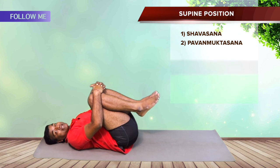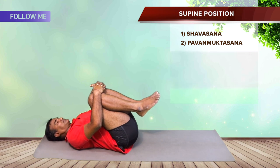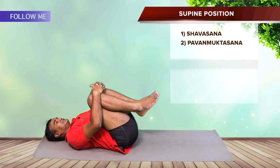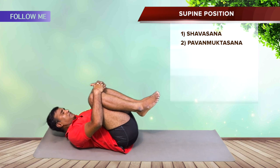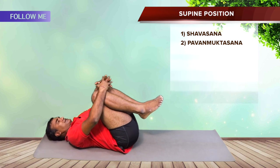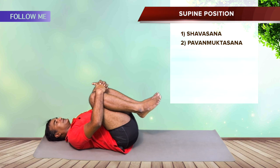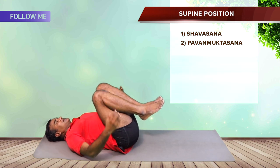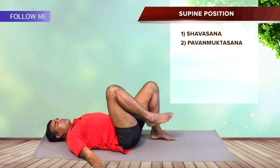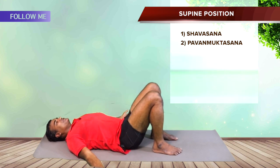The best part about Pavan Muktasana, also known as Apanasana, is that it creates a nice movement in the pelvic diaphragm and is good for digestion. If you are comfortable, you can also lift the head up — this engages the core more strongly. However, if you have any cervical issues, don't do it. Breathe in and breathe out, then inhale, let the arms go down, and exhale — one by one, relax yourself. Observe your breath.